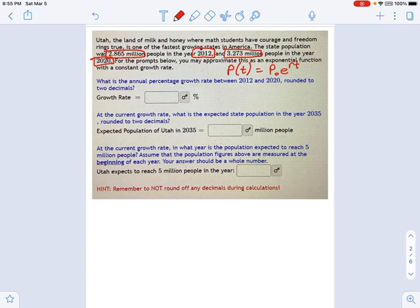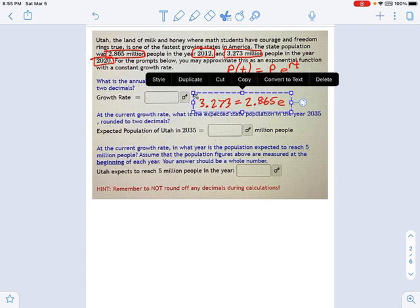So to do that, we're going to use our PERT equation, P-E-R-T. And we're going to fill in some of the things we're given here. One of them is the final population in 2020. That is 3.273. Another thing we're given is P-initial. That is 2.865. You have E, that's just E on your calculator. Let me get some more room here.